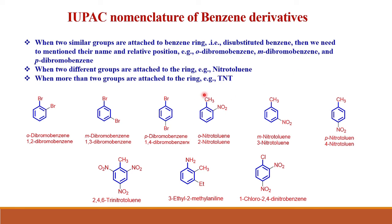When two different groups are attached to the ring, for example nitrotoluene, we consider the relative position of the nitro group. Nitro at position 2 is ortho-nitrotoluene or 2-nitrotoluene. At position 3 it is meta-nitrotoluene or 3-nitrotoluene, and at position 4 it is para-nitrotoluene or 4-nitrotoluene.